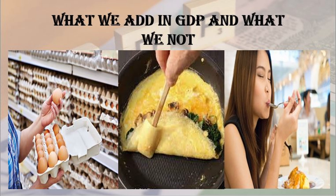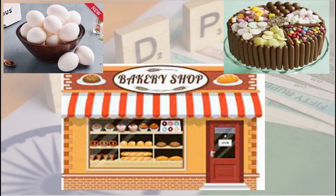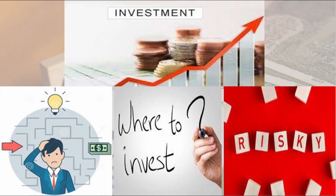As a result, businesses will earn less, which will reduce the purchasing power of people. This brings the question of what we add in GDP and what we don't. For example, if I want to eat an omelet and buy an egg, the price of that egg is added to GDP. But if a baker buys that egg to make a cake to sell, the price of the egg is not counted — rather, the price of the final product, the cake, is added to GDP.